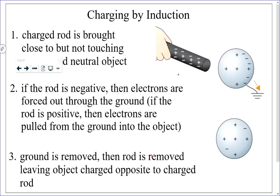If the charging object were positive, then you would be pulling electrons out of the ground onto the neutral object, making the neutral object positive. Regarding conservation of charge: charge is conserved, but that extra charge the charged object now has — there's an equal but opposite amount of that charge on the Earth somewhere. So unless you include the whole planet, talking about conservation of charge in induction is not a very useful idea.